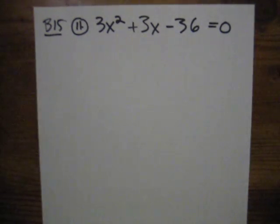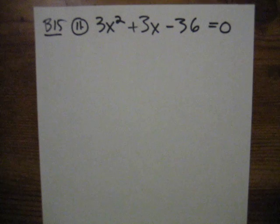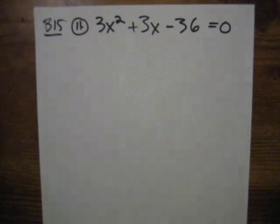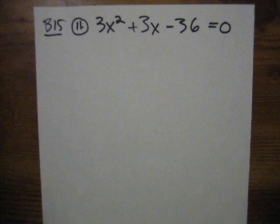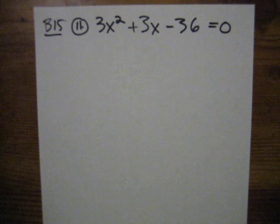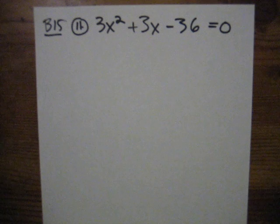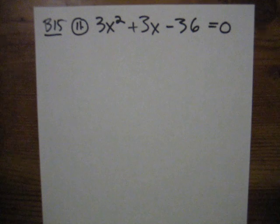Okay, B15, problem number 11. Directions are solved by factoring. So I have 3x squared plus 3x minus 36 equals 0. The first thing I want to do is set that to 0, which it already is. Sometimes it won't say equals 0, so I have to set it to 0. In this case, it's set equal to 0. So my next step is to work through that factoring process.